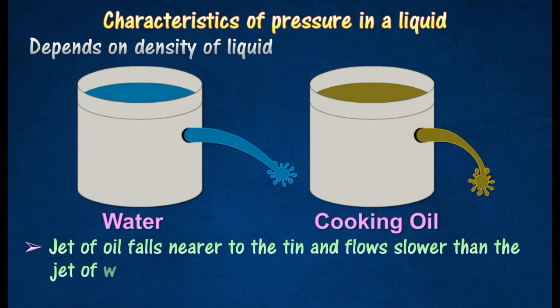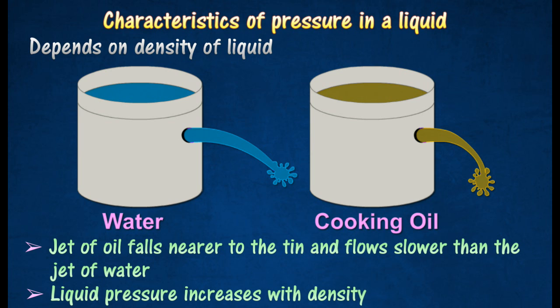It is found that the jet of oil falls nearer to the tin and flows slower than the jet of water, although both tins contain equal amounts of oil and water. This shows that oil pressure is less than water pressure. Therefore the pressure of a liquid increases with density.